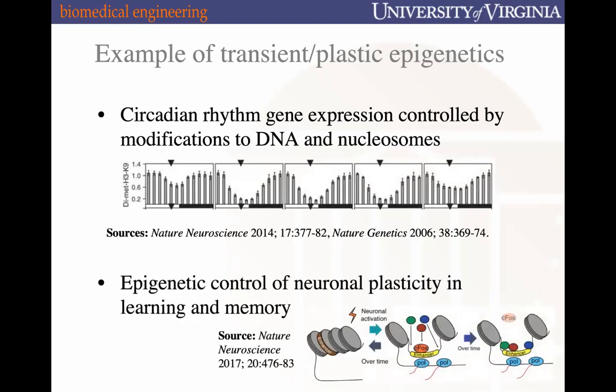Another example of transient epigenetics is neuronal plasticity. With an activation trigger such as a new learning event or memory recall, a transcription factor called CFOS — a mammalian transcription factor — can activate sites of our genome and lead to transcription tied to learning or memory. When those gene loci are no longer accessible due to changes in chromatin accessibility, that could be thought of as forgetting.